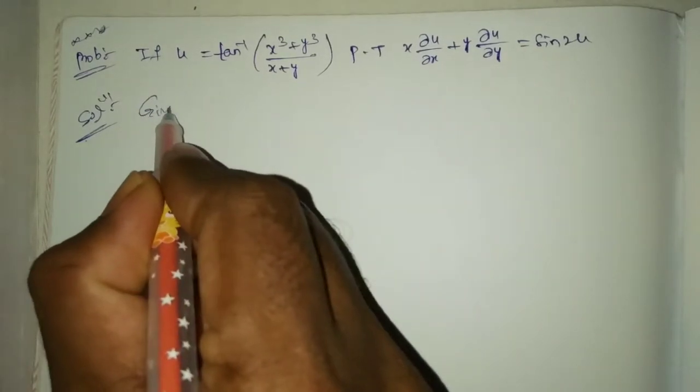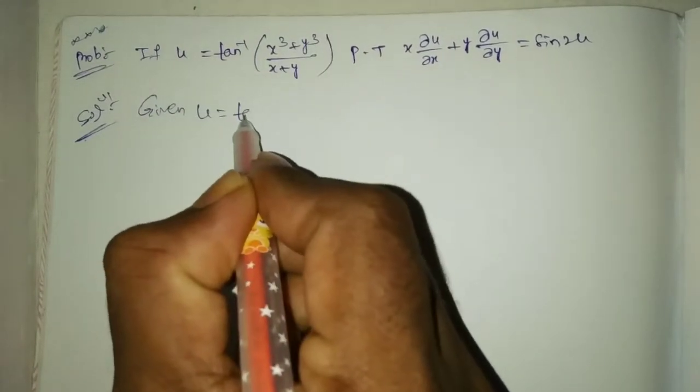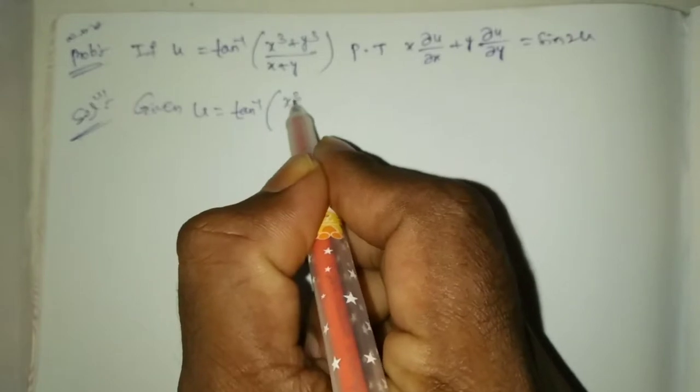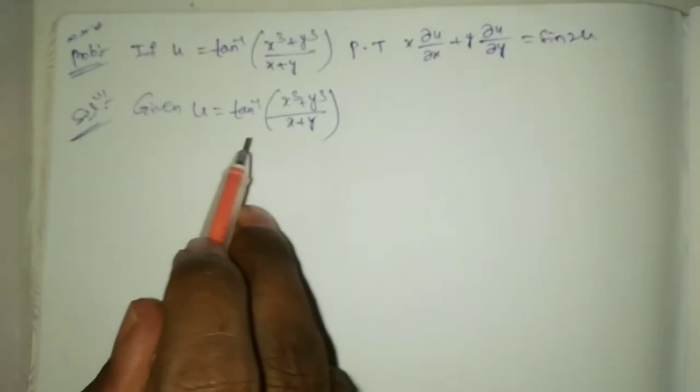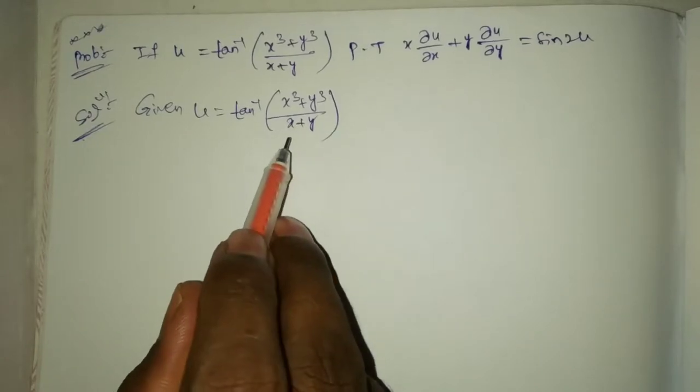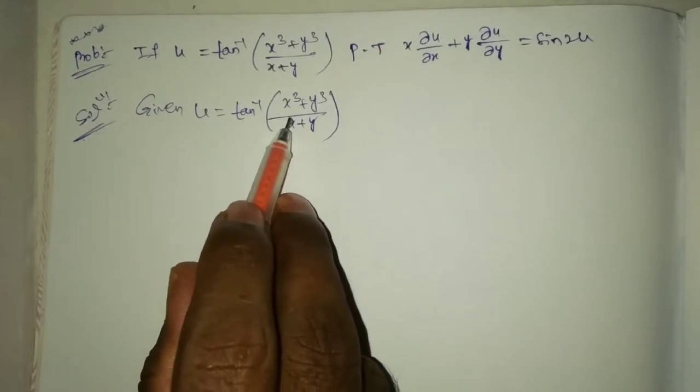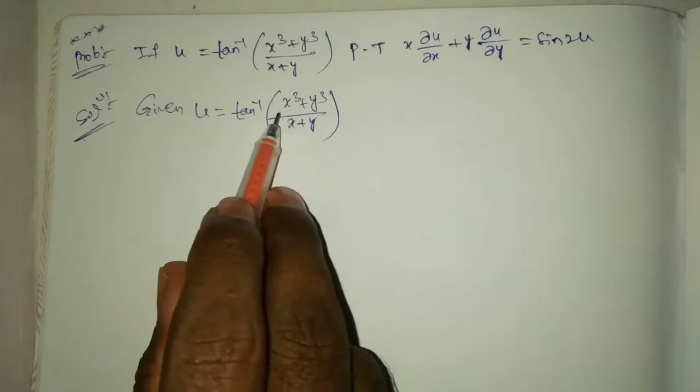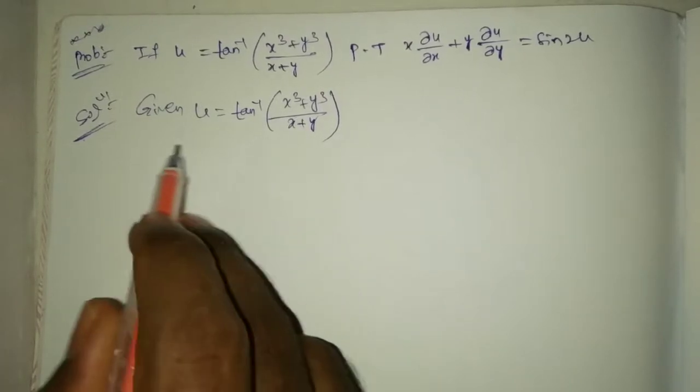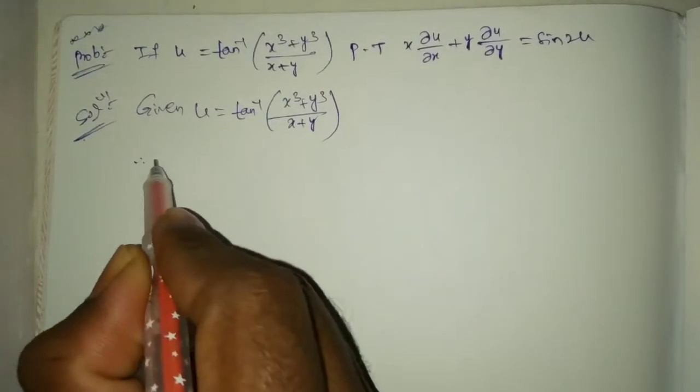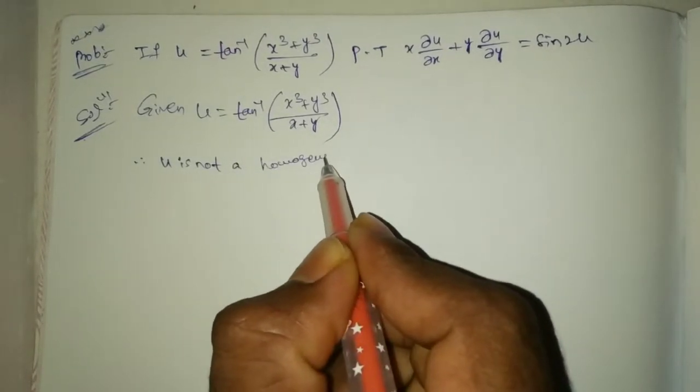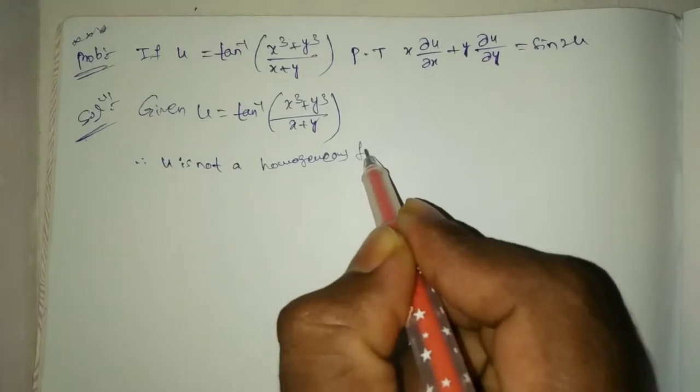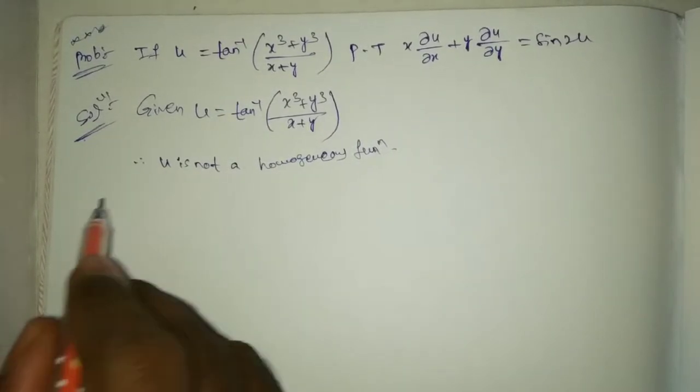Given u equal to tan inverse of x cube plus y cube by x plus y. It is not homogeneous. u is not a homogeneous function.